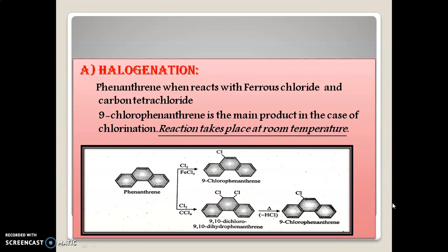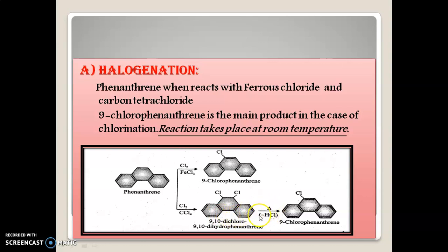Halogenation: Phenanthrene when reacted with ferrous chloride and carbon tetrachloride gives 9-chlorophenanthrene as a major product. The reaction takes place at room temperature. When phenanthrene is chlorinated with carbon tetrachloride, it gives an intermediate compound 9,10-dichloro-9,10-dihydrophenanthrene, where two chlorine atoms are attached to the 9th and 10th positions. Further, when it is heated and HCl is removed, it gives the stable major product 9-chlorophenanthrene, with chlorine attached at the 9th position.